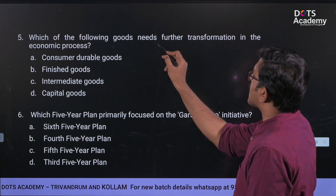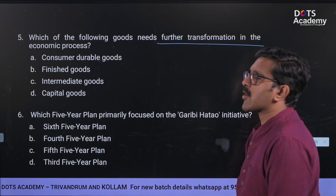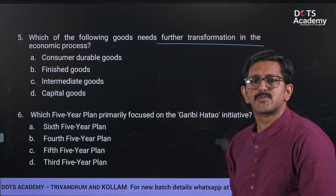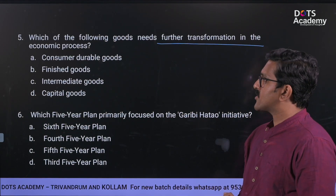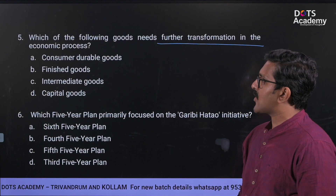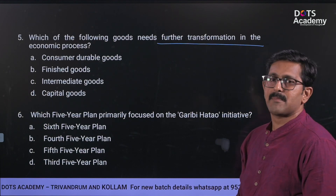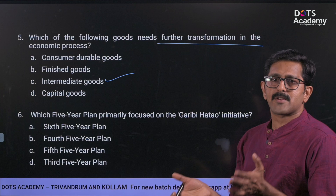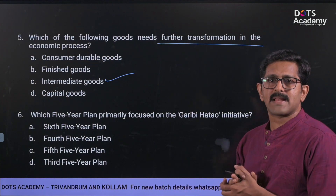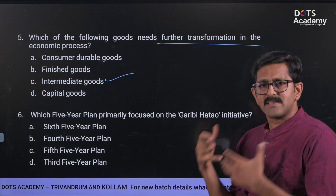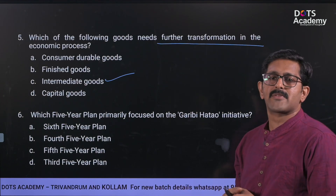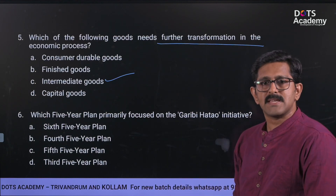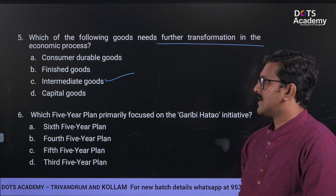Next question: What type of goods undergoes transformation in the economic process? Options are consumer durable goods, finished goods, intermediate goods, and capital goods. The answer is intermediate goods — they are used in the production process and are not the final finished goods. Option C, intermediate goods, is the correct answer.